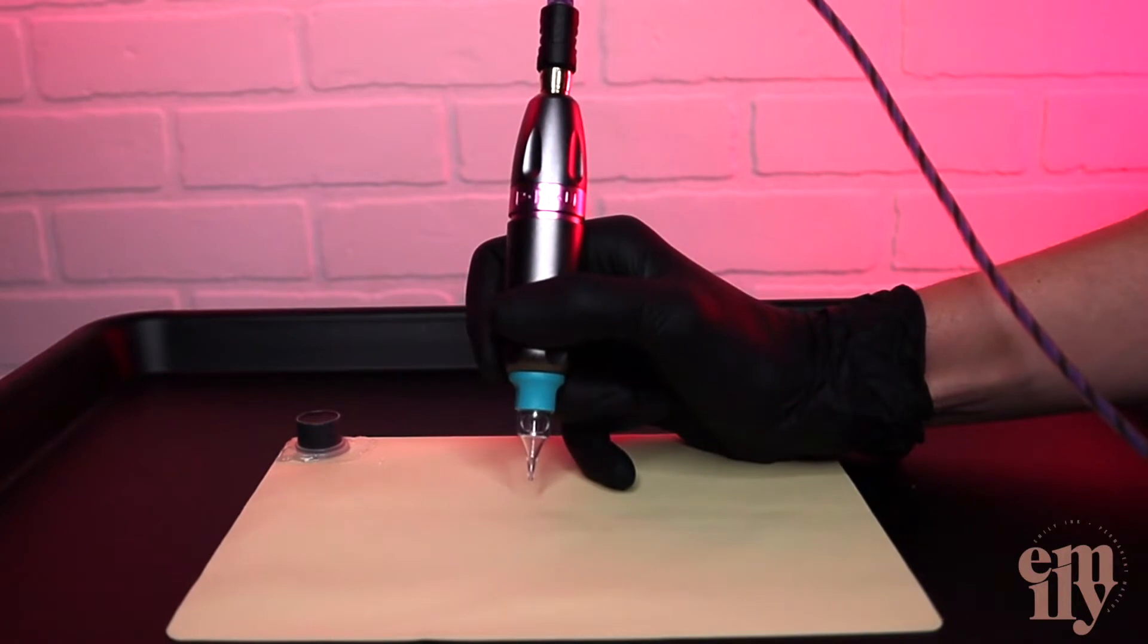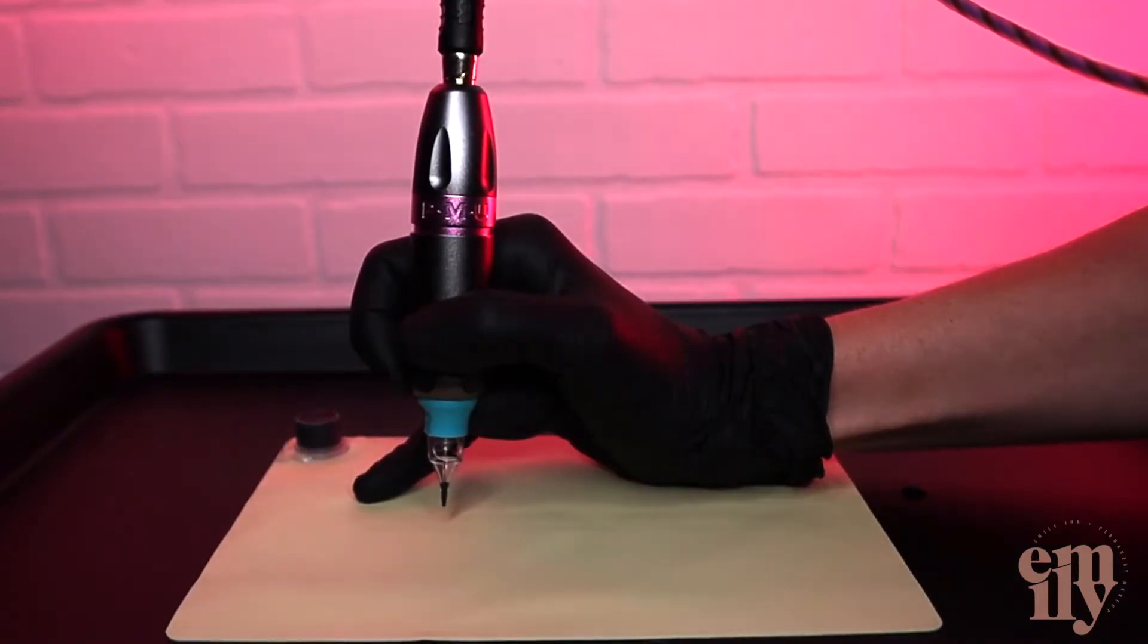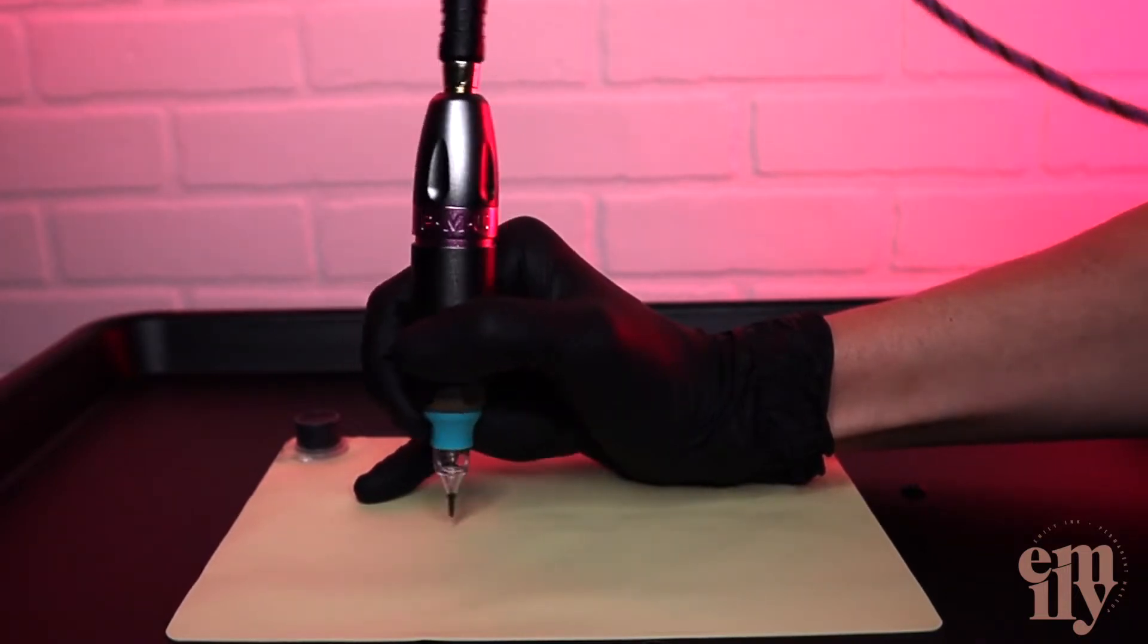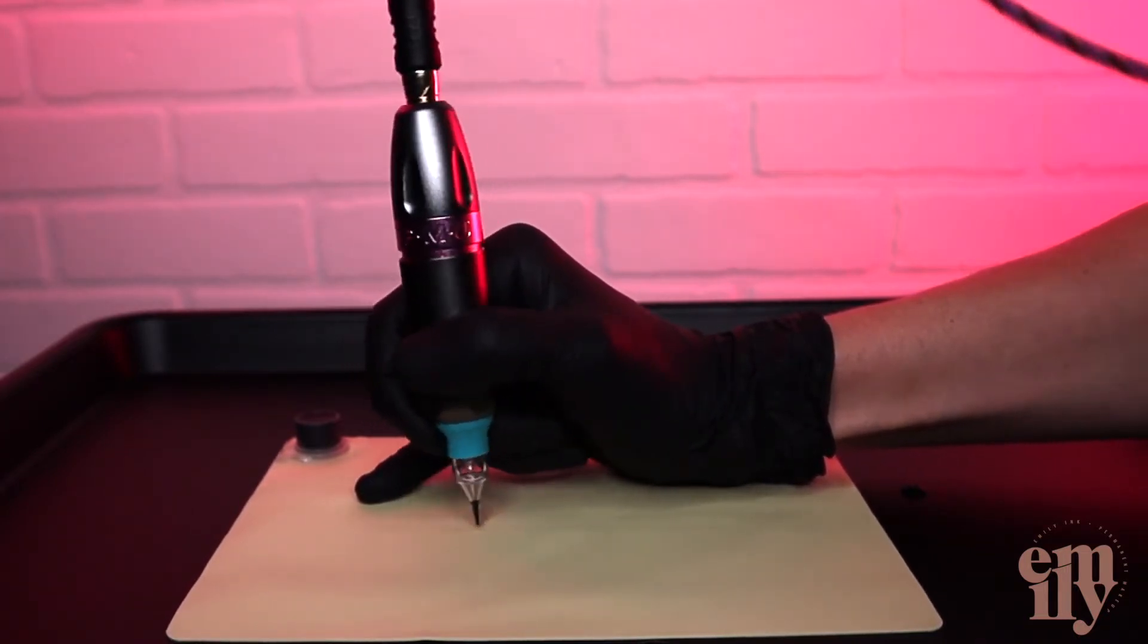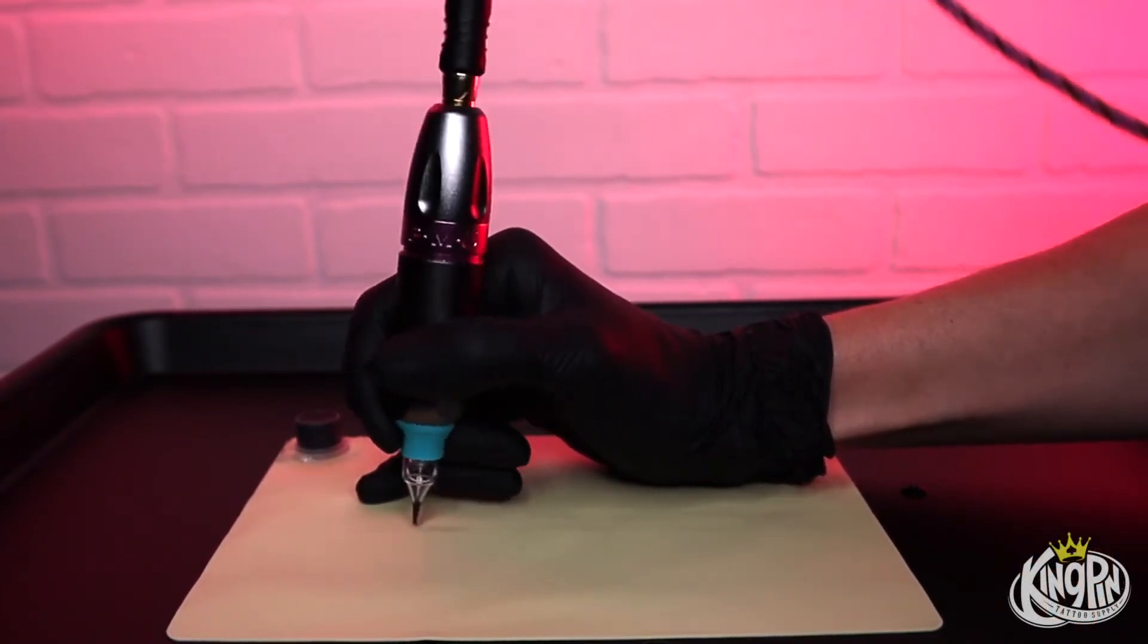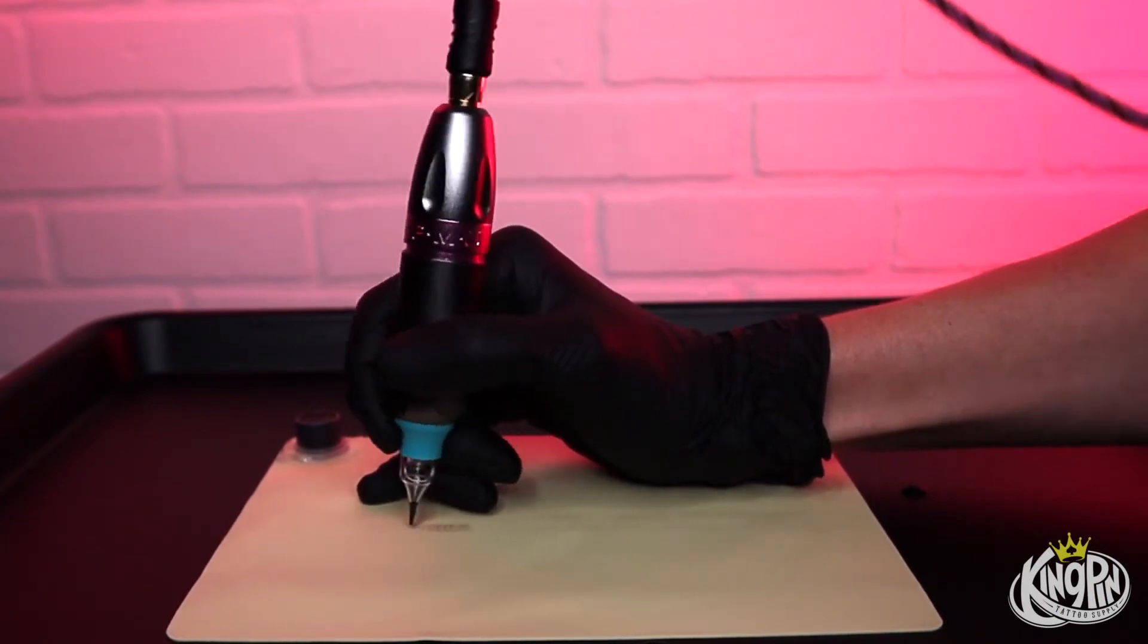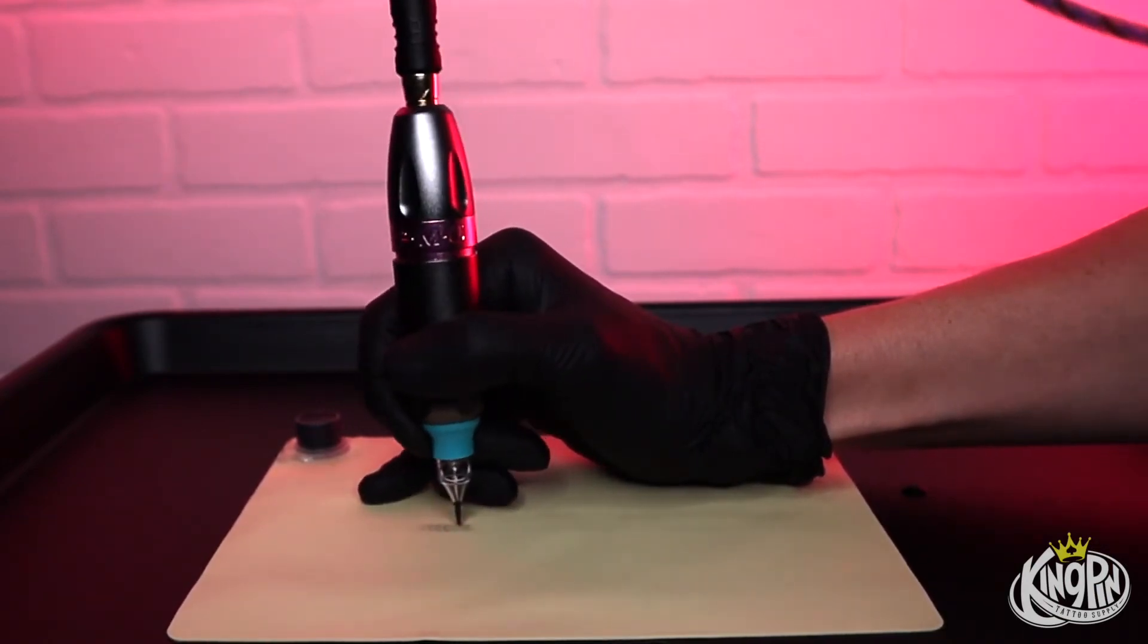I would say the most popular technique right now is called whip shading. Whip shading is a technique where you hold your machine at 90 degrees to the skin and you swing that machine over the skin. As you swing over, the machine will deposit tiny drops of pigment. For this technique we use small needle configurations like a one round liner or a three round liner.